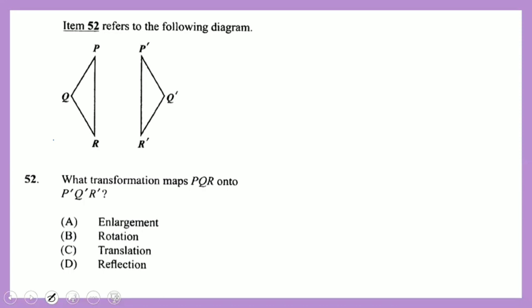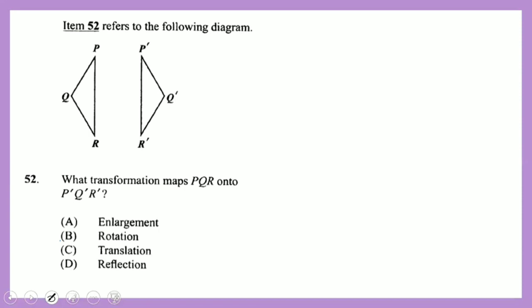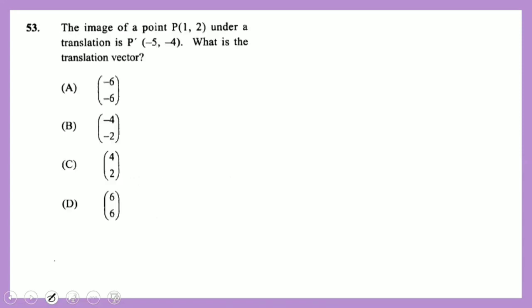Question 52: what transformation maps one shape to the other? It's not an enlargement (size didn't change), not a rotation, not a translation. It is a reflection — you can clearly see the mirror line with matching points on either side.